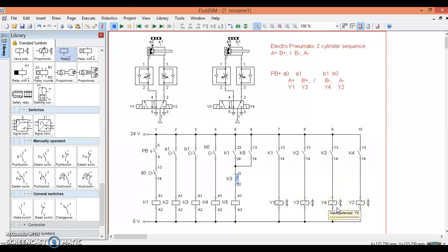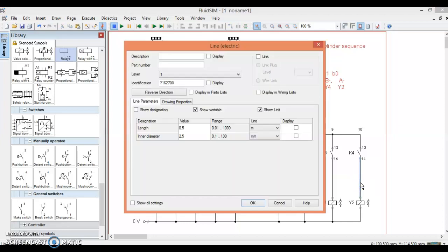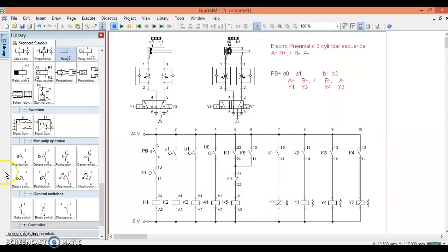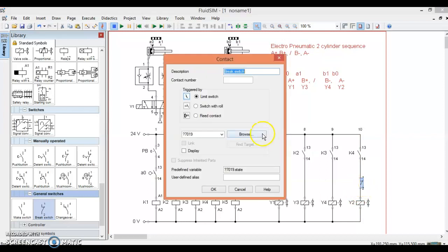So we had a problem here when Y1 came on, Y2 was already on. Now, if we know that K5 is going to be off in this part of the sequence, if we put a normally closed contact here, run K5.